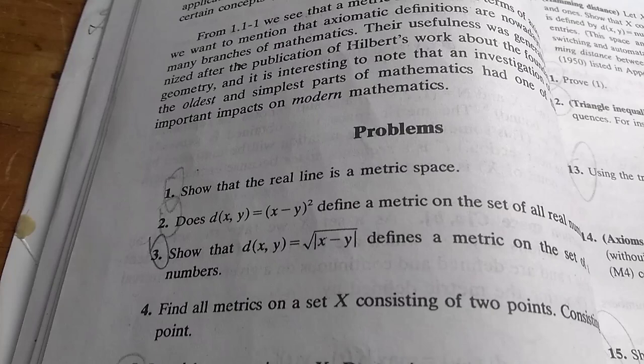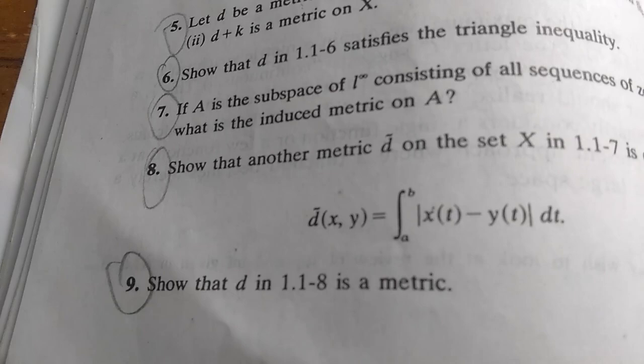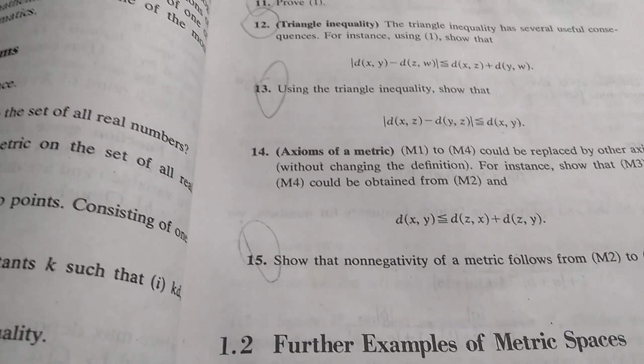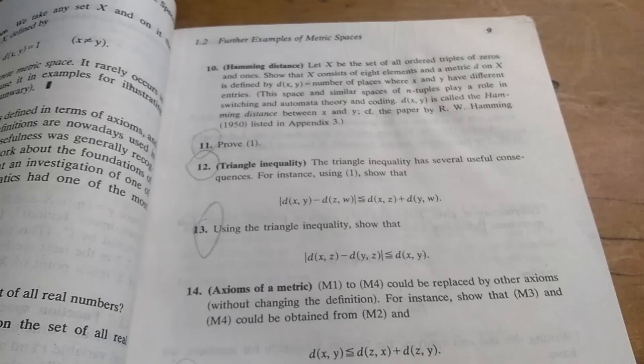The exercises in this book are fantastic. Notice I circled some of them. That means I did those. So I did 1, 2, 3, 5, 6, 7, 8, 9. I did 11, 12, and 13, and 15. So I did most of the problems in 1.1.